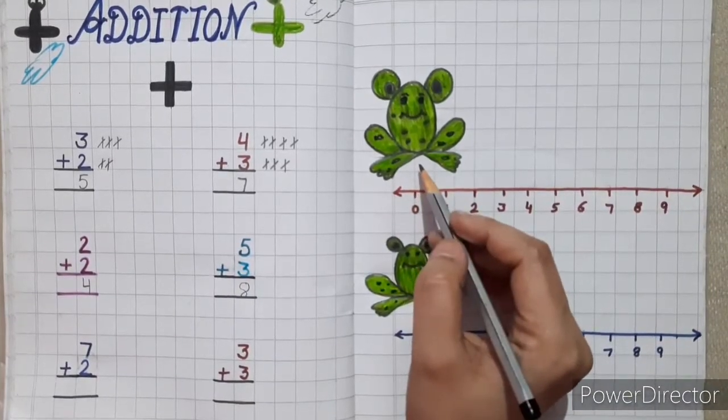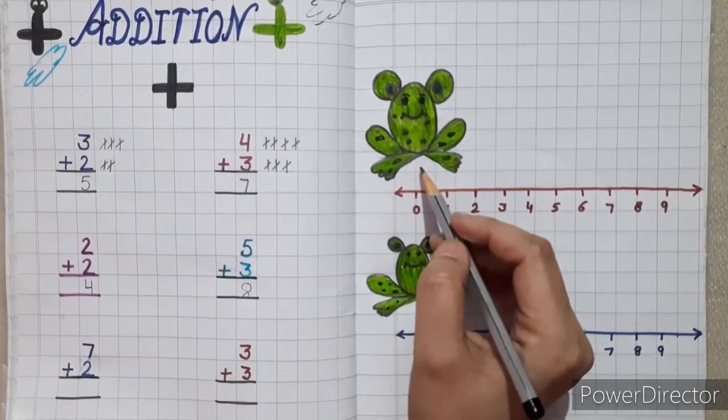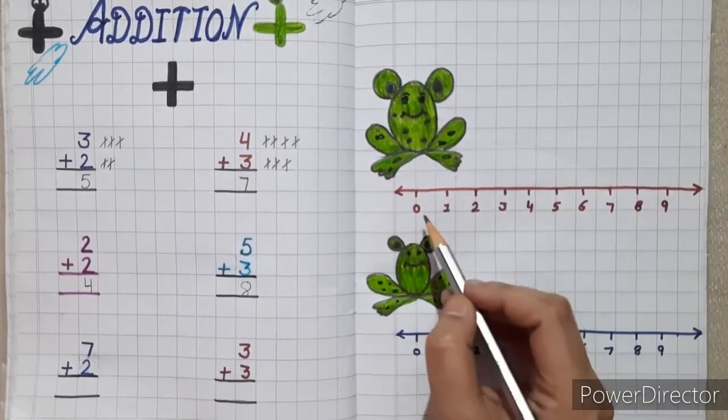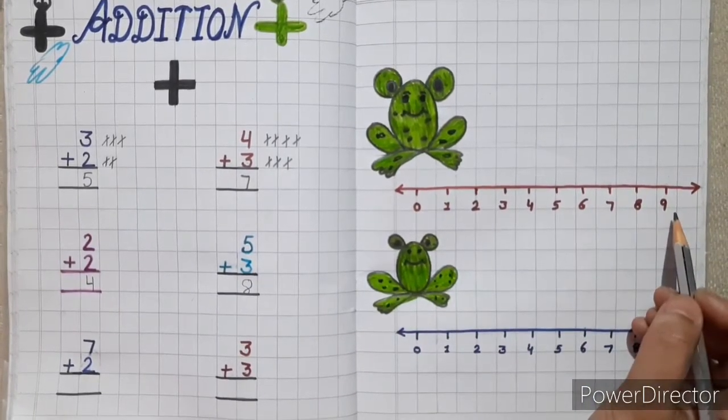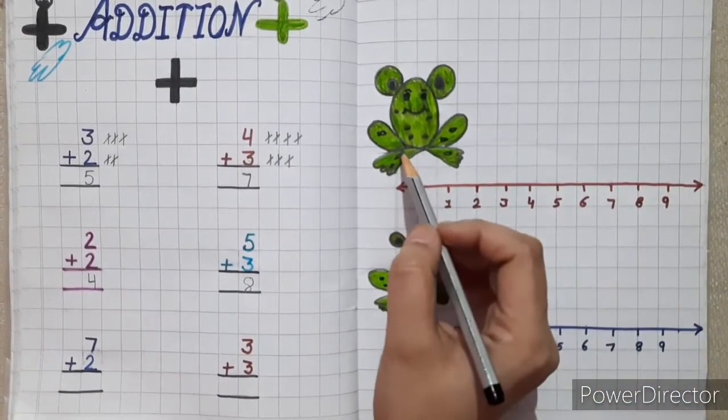Next is frog jumping method. Kids, here I have made number scale from 0 to 9. So let's understand frog method now.